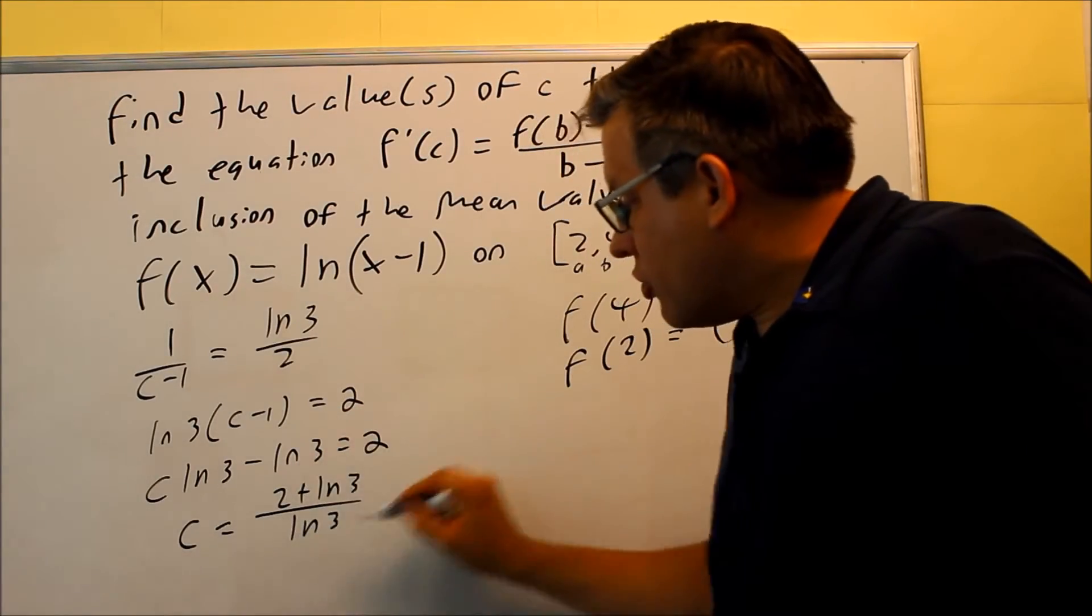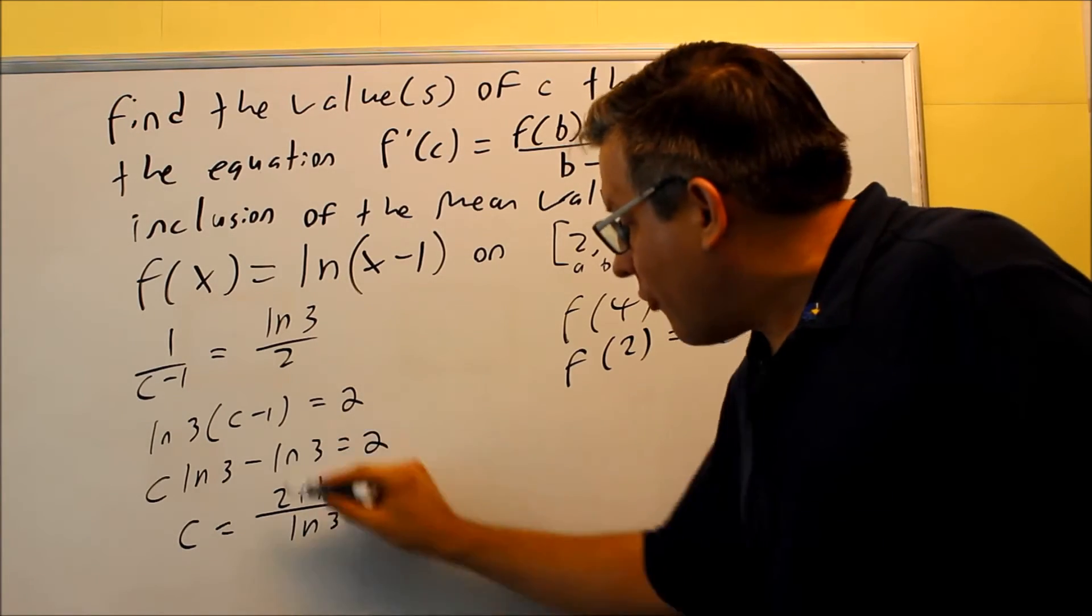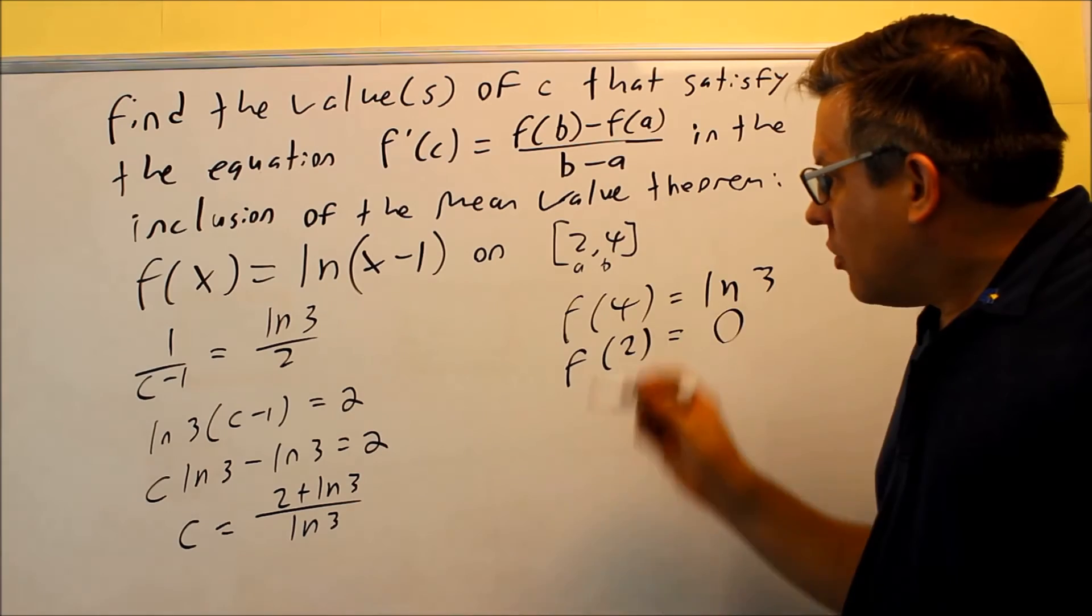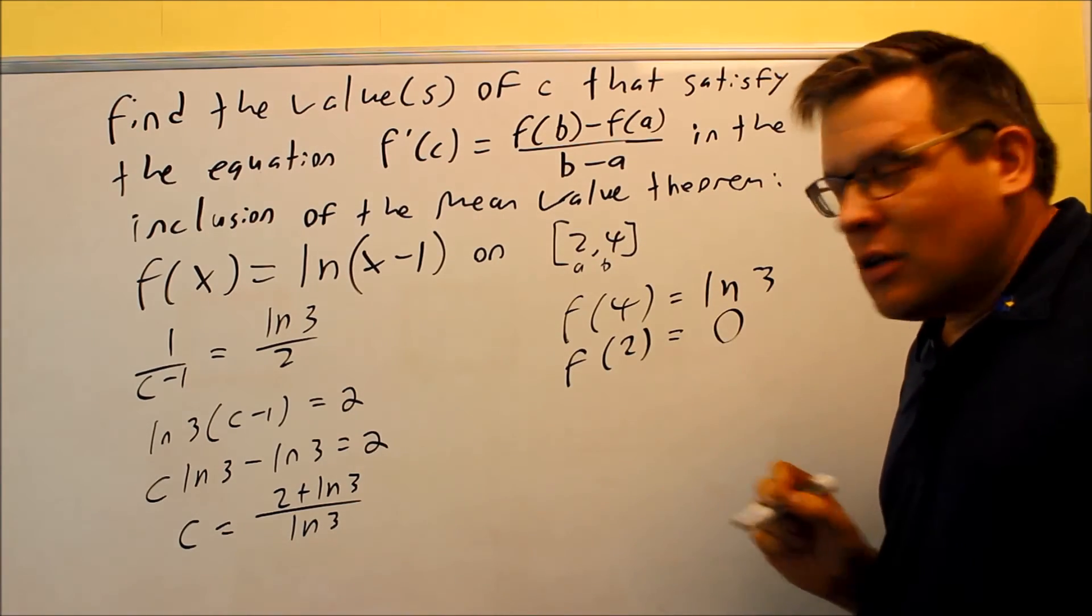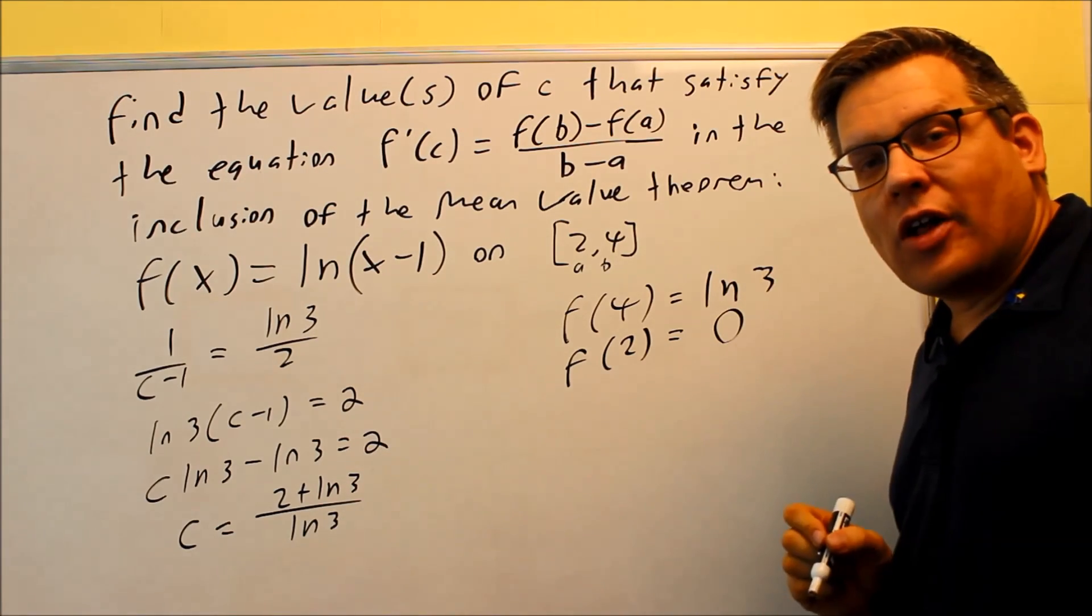You can put this into your calculator, and you should be able to verify that the decimal value is, in fact, between 2 and 4. So this is your answer: c = (2 + ln(3))/ln(3). That's your c value.